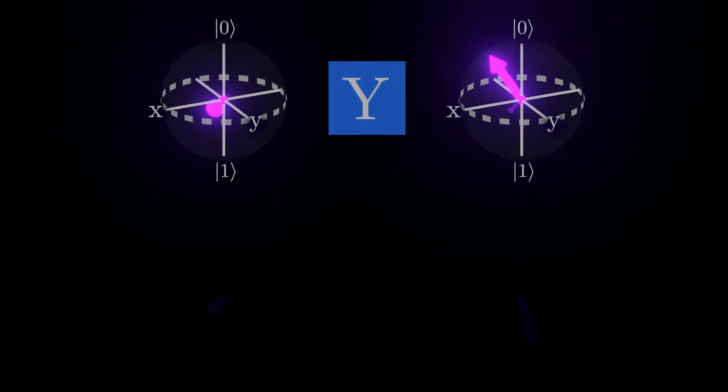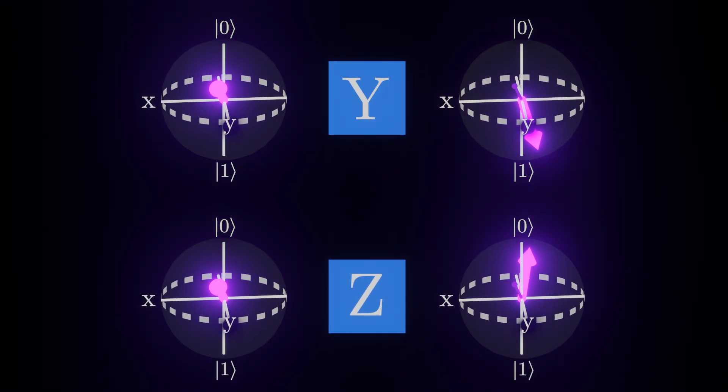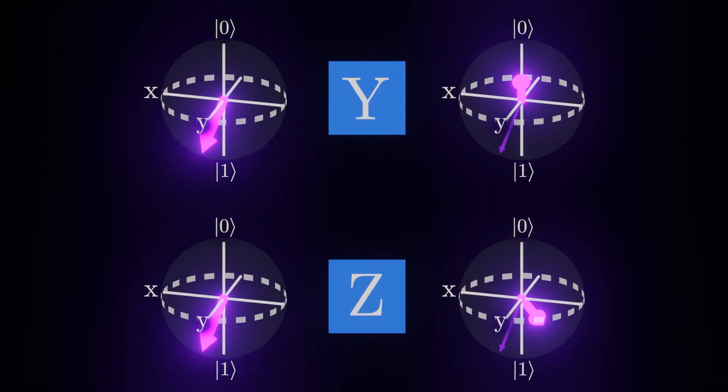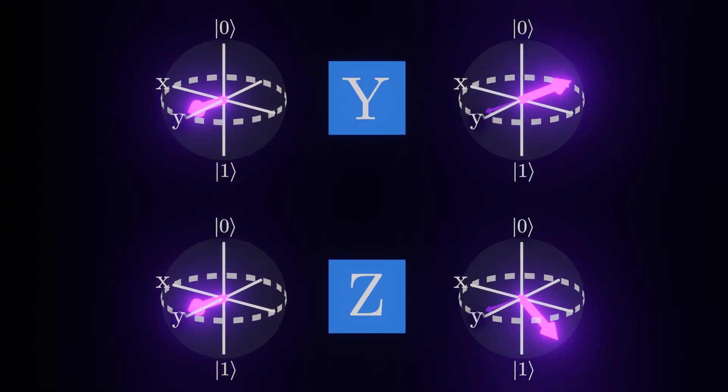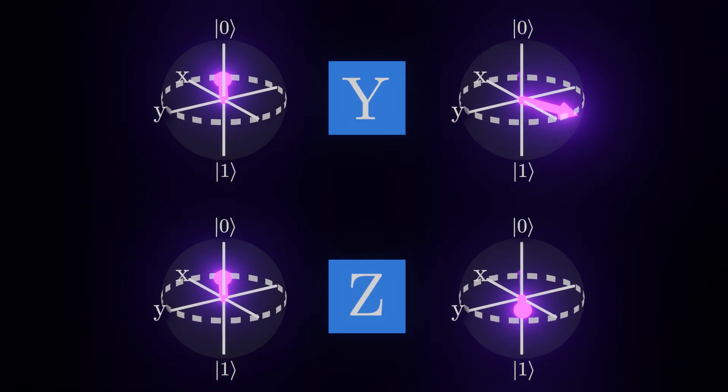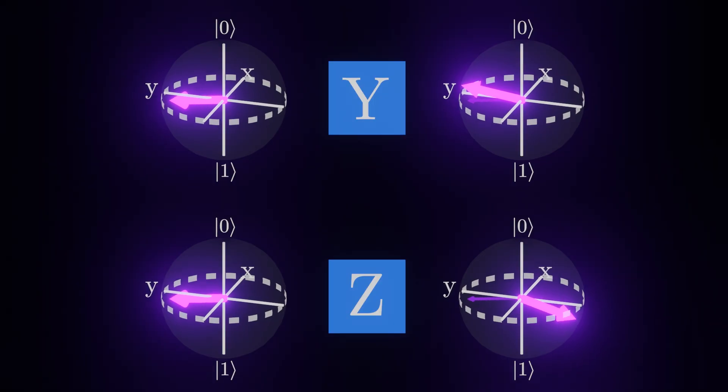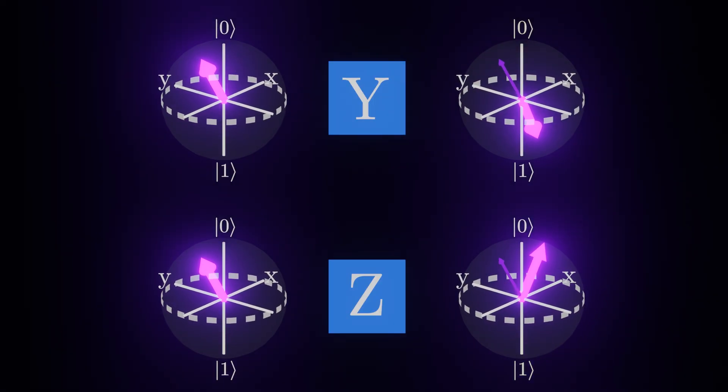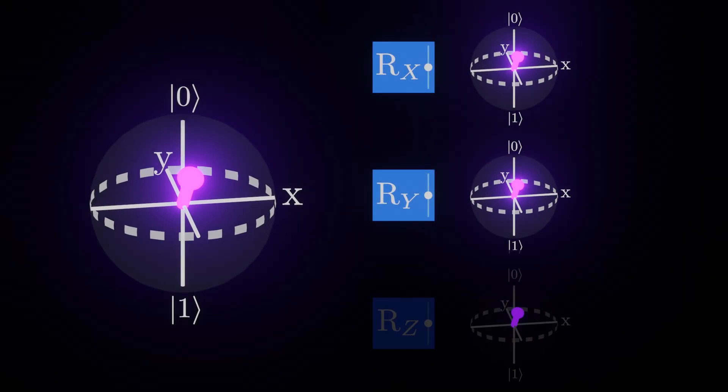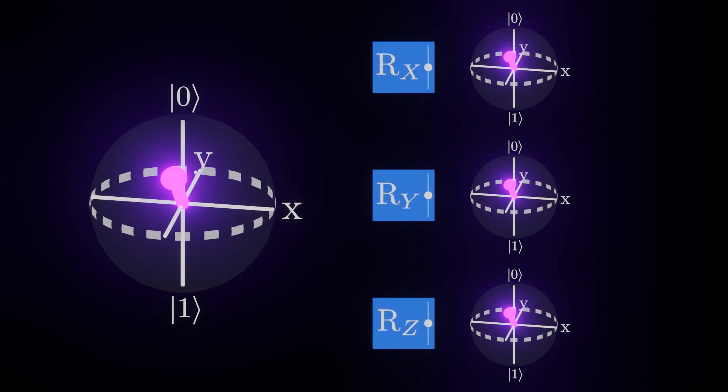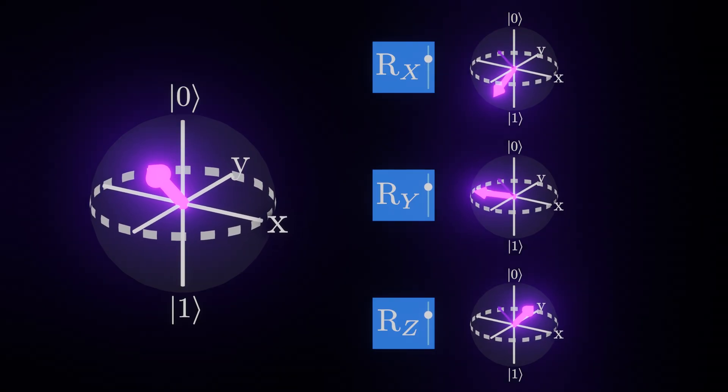The predictably named Y and Z gates perform the same function around their respective axes. More generally, we can talk about RX, RY, and RZ gates, that rotate along these axes by some specific amount that we get to pick.